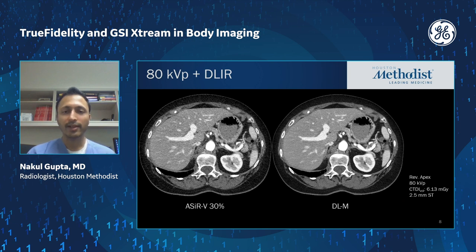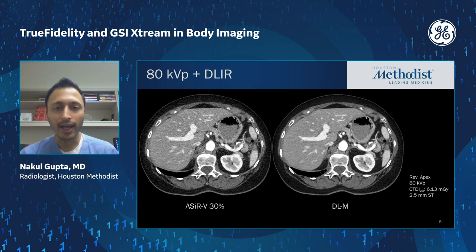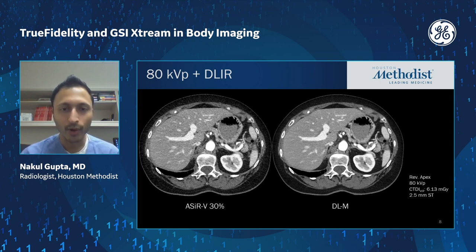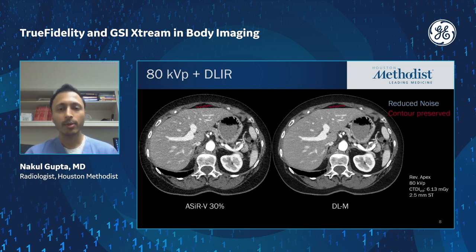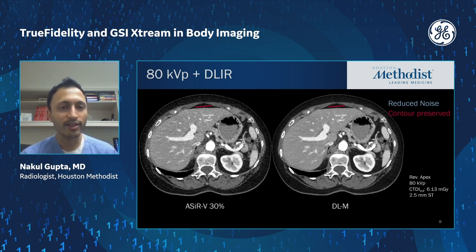Low KVP scanning is also an area where deep learning recon really shines. Here's an example: an 80 KVP scan in an adult patient with a CTDI of six — a very reasonable dose level. ACER-V at 30% has moderate noise, whereas the deep learning medium strength image has much lower noise while maintaining a very natural image texture and maintaining contours. At very high levels of iterative reconstruction, contours can become distorted, and smooth contours might start to look a little jagged — that's not the case with deep learning.